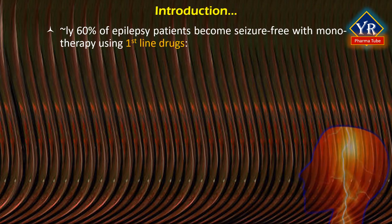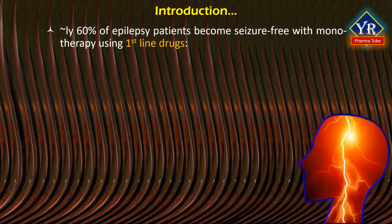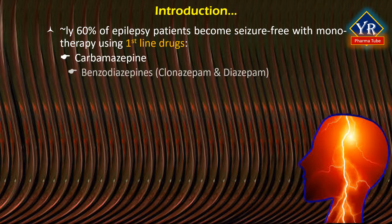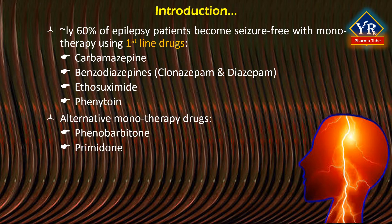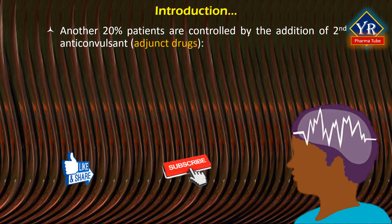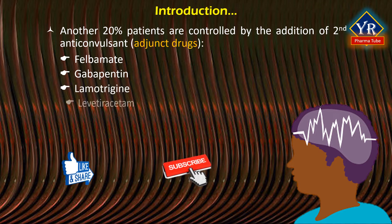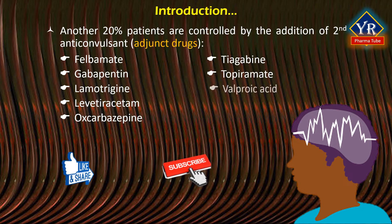Approximately 60% of patients with epilepsy become seizure-free with monotherapy using first-line drugs such as carbamazepine, benzodiazepines such as clonazepam and diazepam, ethosuximide, or phenytoin. Alternative monotherapy drugs include phenobarbitone and primidone. Another 20% of patients have epilepsy controlled by the addition of a second anticonvulsant — adjunct drugs — for example felbamate, gabapentin, lamotrigine, levetiracetam, oxcarbazepine, tiagabine, topiramate, valproic acid, and zonisamide.